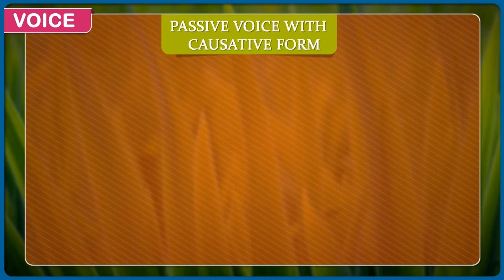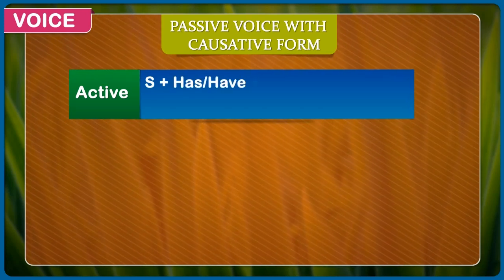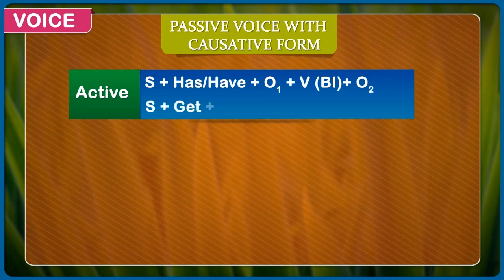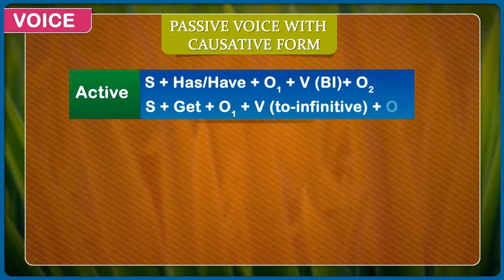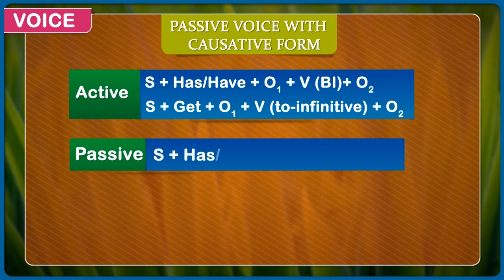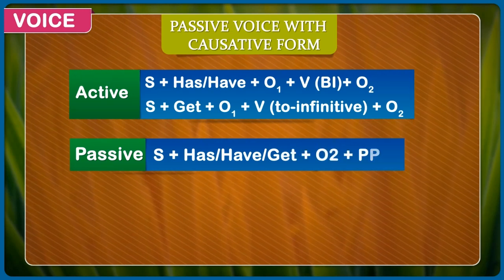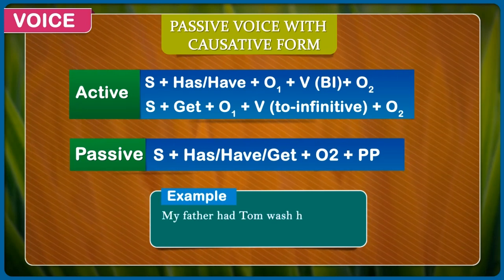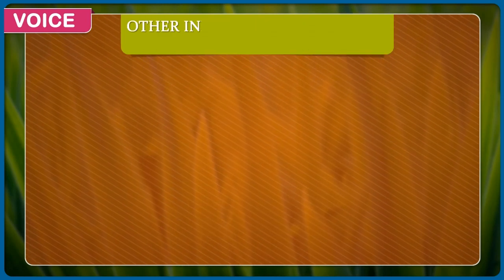Passive voice with causative form. Active: subject + has/have + first object + verb + second object. Subject + get + first object + to infinitive + second object. Passive: subject + has/have/get + second object + past participle. Example: My father had Tom wash his car. My father had his car washed by Tom.